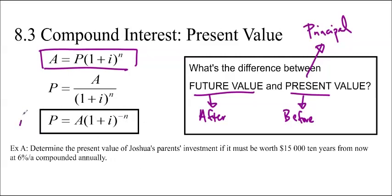So, the new formula is P equals A times 1 plus I to the negative N. That's our new formula right here. And you don't really need to memorize it since it's derived so easily from the original compound interest formula, but it's just something to keep in mind if you wanted to know.